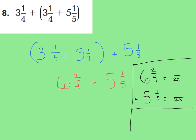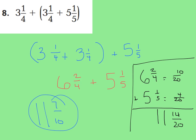5 times 4 is 20, so 1 times 4 is 4 — 1 fifth equals 4 twentieths. 4 times 5 is 20, so 2 times 5 is 10 — 2 fourths equals 10 twentieths. Adding 10 twentieths plus 4 twentieths is 14 twentieths, and 6 plus 5 is 11 wholes. Since both numbers in 14 twentieths are even, I can simplify by dividing numerator and denominator by 2, giving 11 and 7 tenths as the final answer.